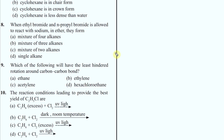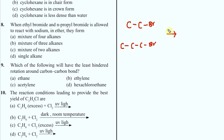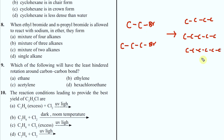Question 8: when ethyl bromide and n-propyl bromide are allowed to react with sodium - basically I have ethyl bromide and n-propyl bromide. What do you get? Ethyl plus ethyl, ethyl plus propyl, propyl plus propyl. So you will get a mixture of three alkanes. If A and B react in Wurtz reaction, you get AA, AB, and BB - three different products.